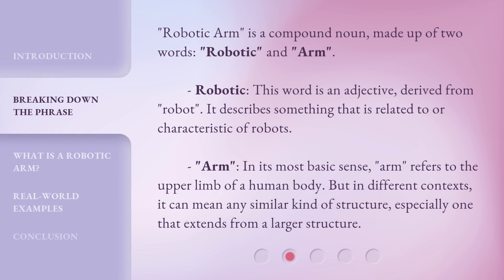'Robotic Arm' is a compound noun made up of two words: robotic and arm. 'Robotic' is an adjective derived from 'robot' — it describes something that is related to or characteristic of robots. 'Arm,' in its most basic sense, refers to the upper limb of a human body, but in different contexts it can mean any similar kind of structure, especially one that extends from a larger structure.